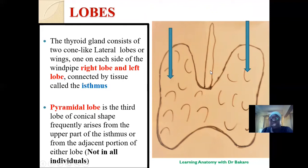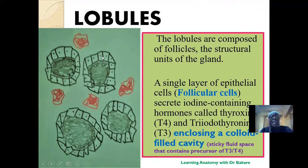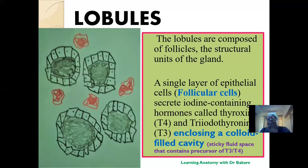The pyramidal lobe is the third lobe — a conical structure originating from the upper part of the isthmus, not seen in all individuals. Histologically, the lobes are subdivided into lobules, and under the microscope you see follicles: a fluid cavity called the colloid at the center, surrounded by a single layer of follicular cells. Follicular cells produce T3 and T4, which are taken up by the surrounding capillary network directly into the blood.